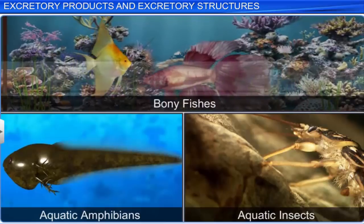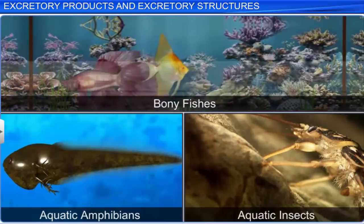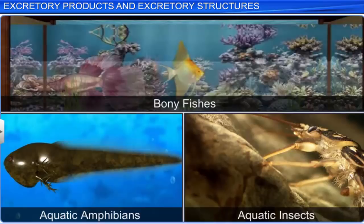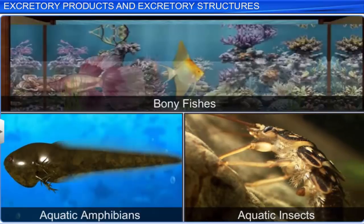Generally, bony fishes, aquatic amphibians, and aquatic insects excrete ammonia in the form of readily soluble ammonium ions through their gills or body surface by the process of diffusion. Animals that excrete ammonia are called ammonotelic, while the process is called ammonotelism.